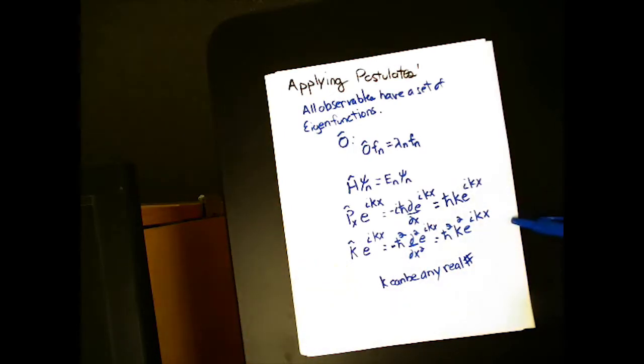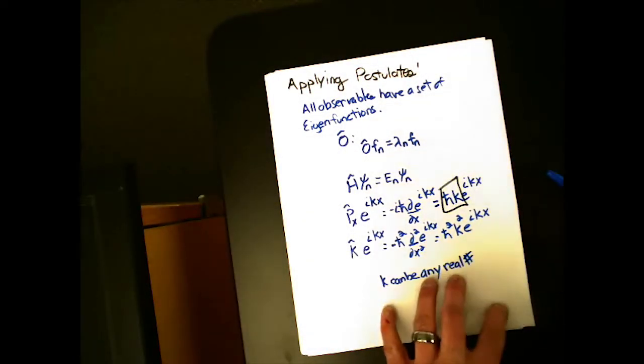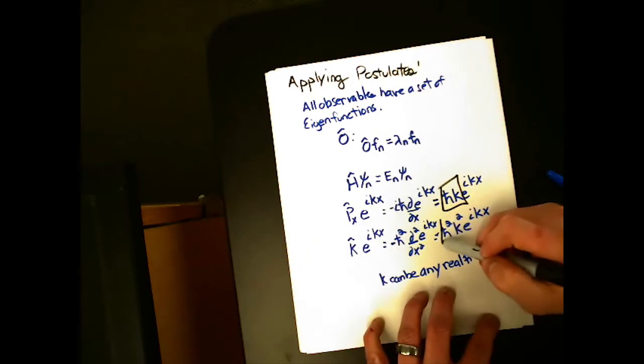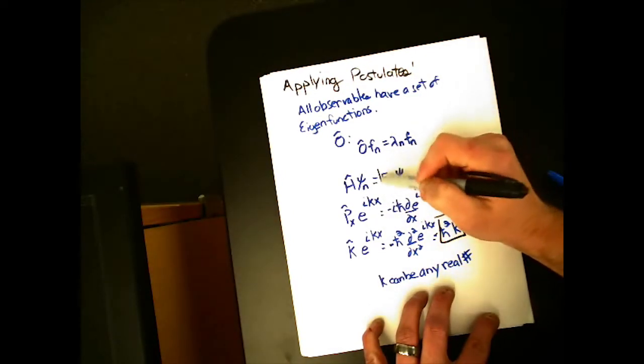So in these examples, what's the eigenvalue for the momentum operator? It's h bar k. What's the eigenvalue for the kinetic energy operator? H bar squared k squared. And what's the eigenvalue for the Hamiltonian? It's the energy.